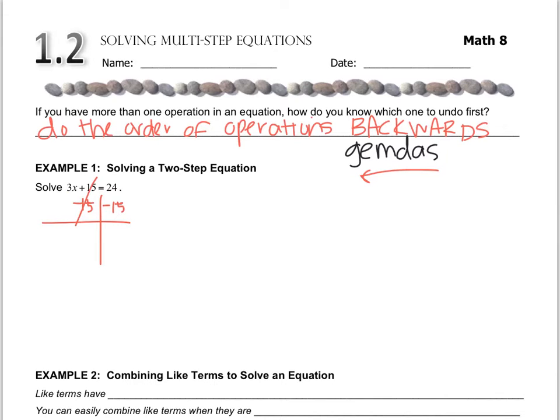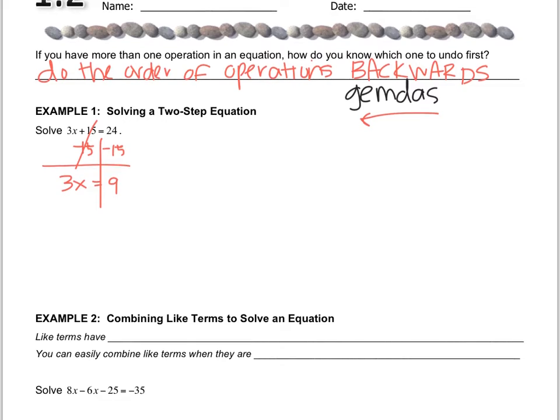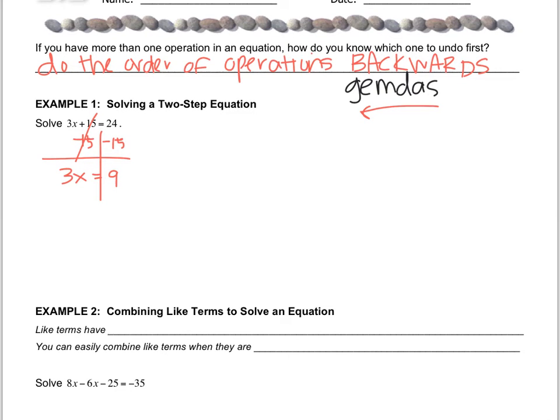Then you bring down what's left, so I have 3x equals 9. Then you look again and say what operation do I have? I have multiplication so I'm going to remove it by doing division. So divide both sides by 3, remember use the advanced fraction bar, and so we get x equals 3.